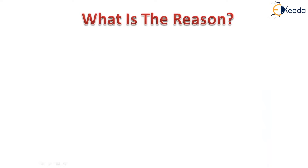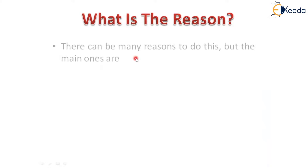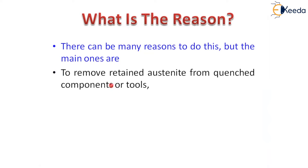What is the reason behind this sub-zero heat treatment process? There are many reasons and advantages available, along with some disadvantages. The main reason we adapt this process is that it removes the retained austenite from quenched components or tools. Whatever retained austenitic structural changes are available from quenched components can be removed by this sub-zero heat treatment process.